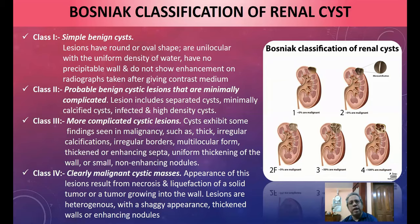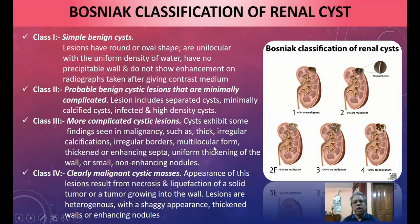Class III consists of more complicated cystic lesions that exhibit findings seen in malignancy, such as thick irregular walls, irregular calcifications, multi-locular forms, thickened or enhancing septa, and uniform thickening of the wall or small non-enhancing nodules. These are not clean-cut benign cystic lesions; they are complicated cystic lesions.